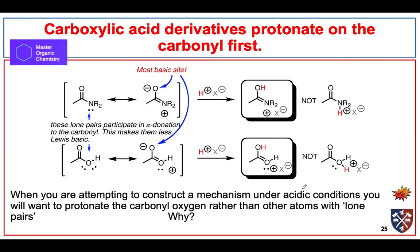Let's look at some properties of our carboxylic acid derivatives. Any reactions done under acidic conditions — we always protonate the carbonyl oxygen first. This oxygen is the most basic site on all of our carboxylic acid derivatives. Even though we have a lone pair of electrons on nitrogen in amides, those are tied up in a resonance form. In esters, one of the lone pairs is also tied up in a resonance form. So the carbonyl oxygen is the most basic site and the site of protonation.